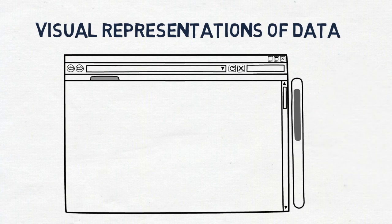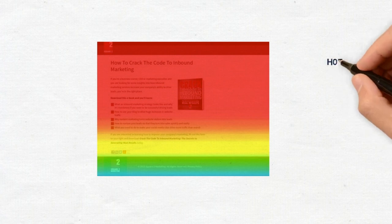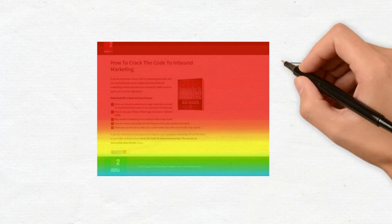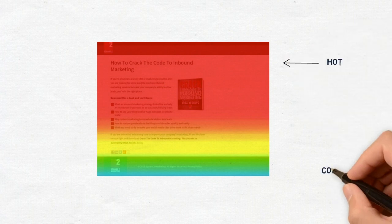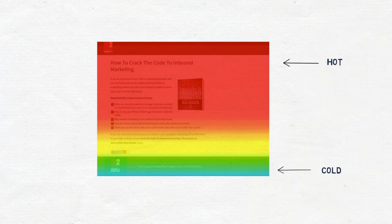They can tell you where a user is clicking, how far they have scrolled down the page, or even where they look. The hot sections attract the most amount of attention, and the cold sections attract the least amount of attention.